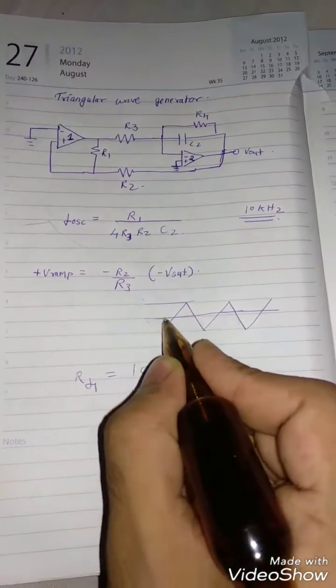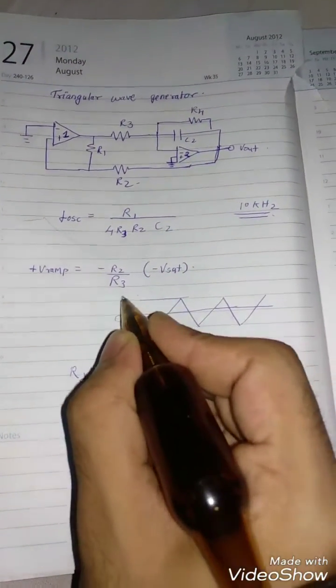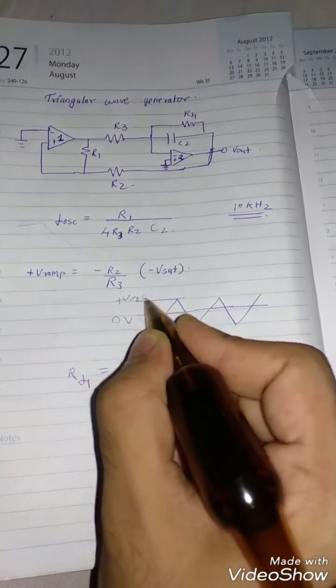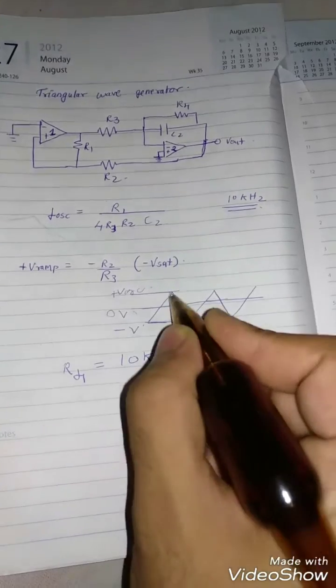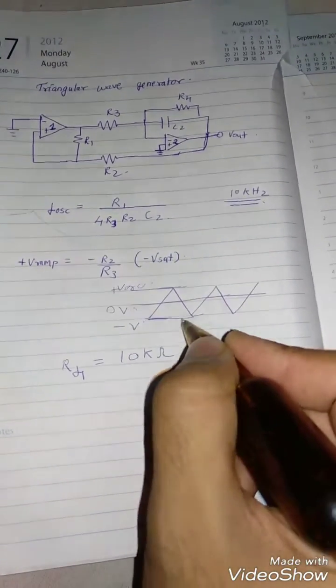So if this is 0 volts, this is plus VRAM and this is minus VRAM, where plus and minus are usually equal for symmetric waveforms.